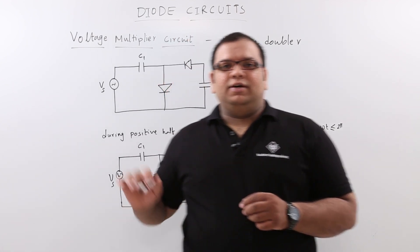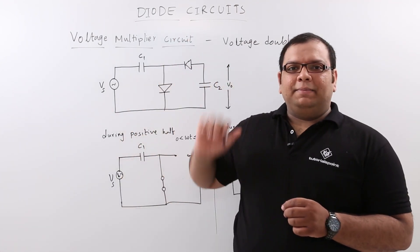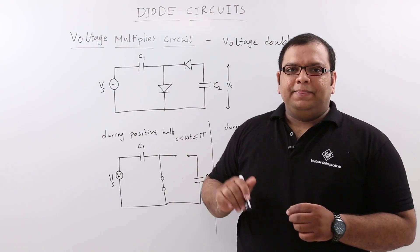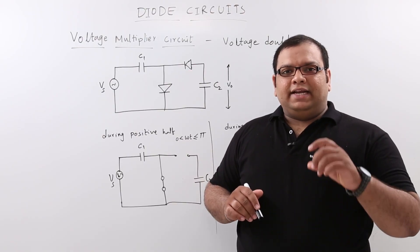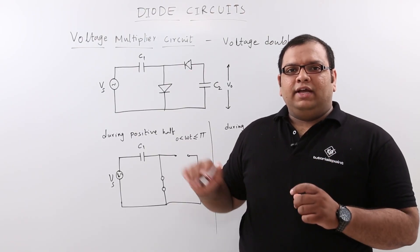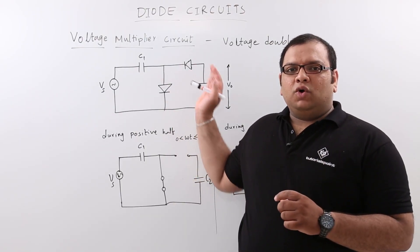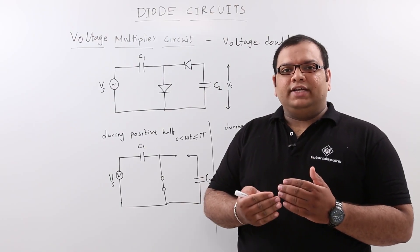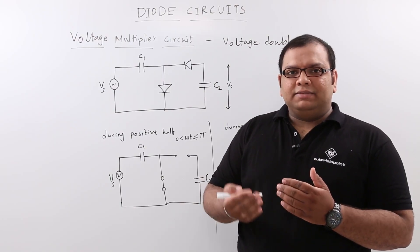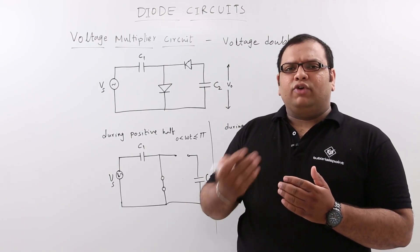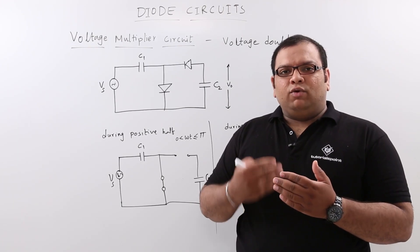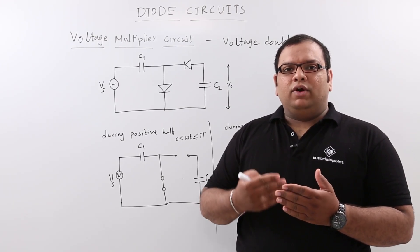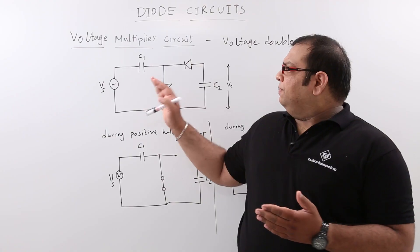In this class let us discuss about voltage multipliers in the diode circuits topic. A voltage multiplier is a diode circuit which will give output as 2 times, 3 times, or 4 times of the maximum voltage. So we call it a voltage doubler, voltage tripler, voltage quadrupler, and so on.